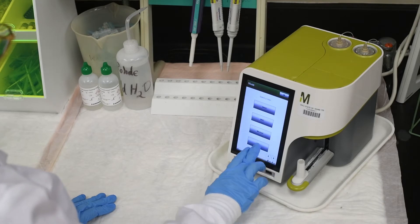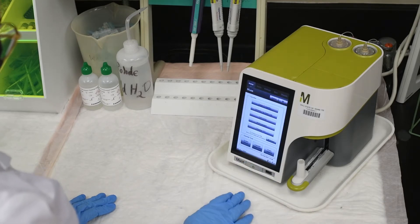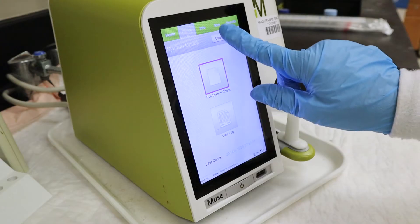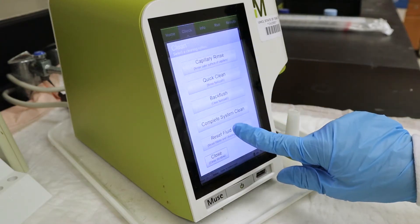Before performing the system check, you will need to verify the fluid levels in the waste and cleaning reservoir bottles found at the bottom right of the display. If the levels are lower than 40%, replace or refill. The percentages will turn red below the 20% threshold. For the sake of this video, I will be replacing and refilling both bottles.